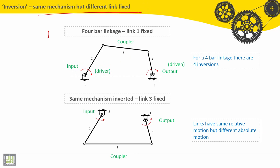Let's start with the first one: four bar linkage with link number one fixed - this is the ground. When link number one is fixed, the input is the rotation of link number two, called the driver. The output is link number four, called the driven link, and number three is called the coupler.